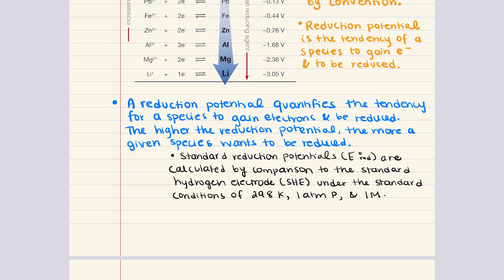In a galvanic cell, which operates spontaneously, the electrode with the most positive reduction potential acts as the cathode where reduction occurs, and the electrode with the less positive reduction potential acts as the anode where oxidation occurs. Since the species with the stronger tendency to gain electrons actually does so, the reaction is spontaneous and the change in Gibbs free energy delta G is negative.